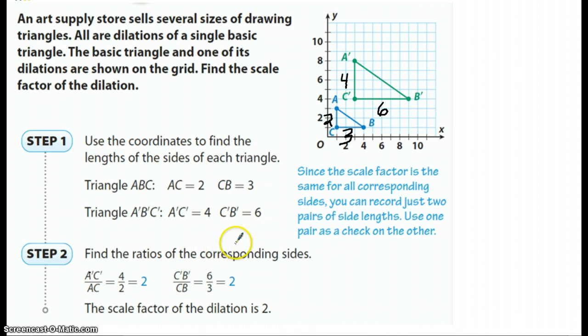So we put the new over the original and we get four divided by two and simplified gives us two. Well, let's take a look at the other side. So we have C prime and B prime, we got six. And C and B, we got three. So we would put the new over the original and we're going to get six divided by three, which is reduced to two. So that tells us if that is the case, the author says, then we are correct by saying that the scale factor of the dilation is two.